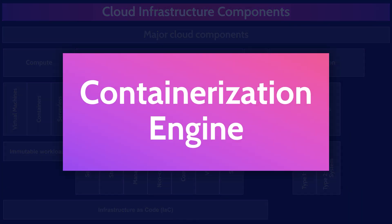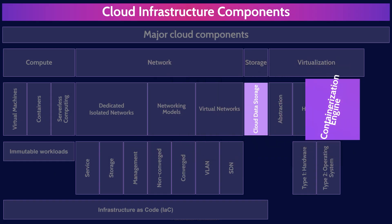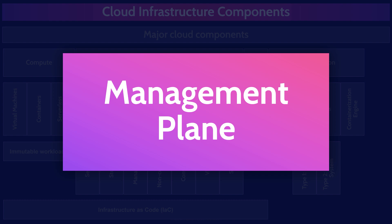Another key piece of virtualization software is containerization engines — software platforms that allow applications to be packaged, deployed, and run in isolated environments called containers. Simply put, containerization engines are what containers run on top of. That brings us to the last but absolutely not least item in this mind map: the management plane. The management plane is what enables the management of the cloud — the set of tools, interfaces, and services used to control, manage, and configure resources in the cloud. The security of the management plane is of paramount importance. If the management plane was taken over by an attacker, they could basically do whatever they wanted in the cloud. So lock your management plane down.